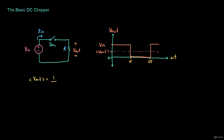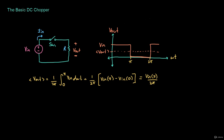The average is going to be equal to one over the period — one over 2π for this example — times the integral over that period. From zero to π it is going to be equal to Vn d(ωt). Doing the calculus, this equals one over 2π times Vn·π minus Vn·0, which is the integral from zero to π of the output voltage. So this equals Vn·π over 2π. The π's cancel out, so the average of Vout is going to be Vn over 2 for this example.